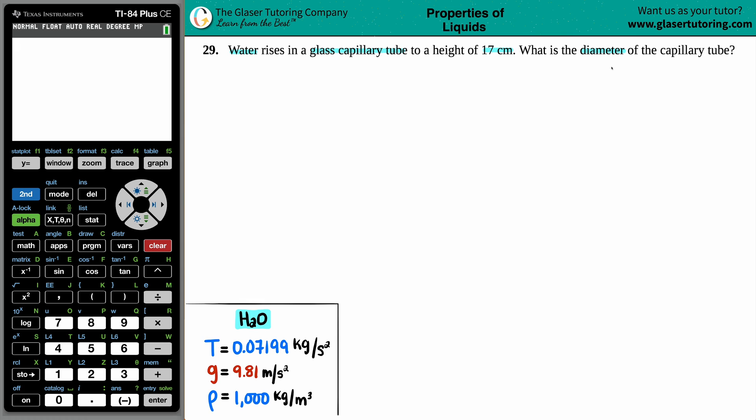And that's this formula right here: h equals 2 times T times cosine of a degree divided by r times rho times g. So let's just go over these variables now. h stands for the height, how high did the substance rise in the glass capillary tube?